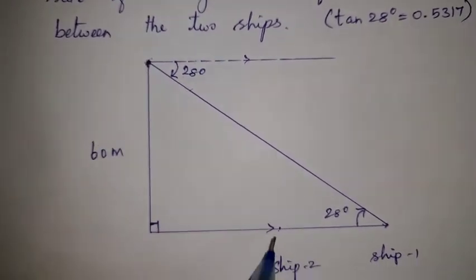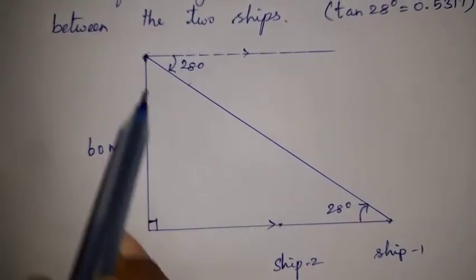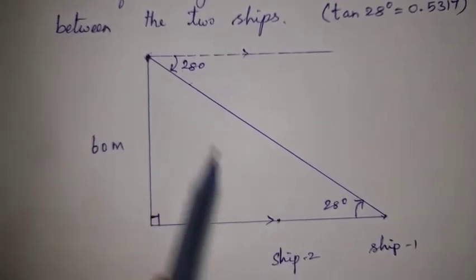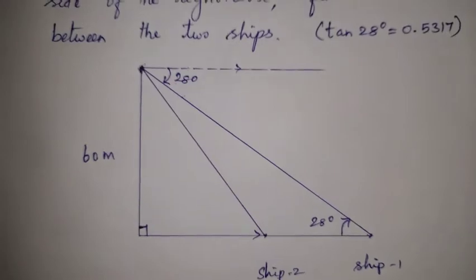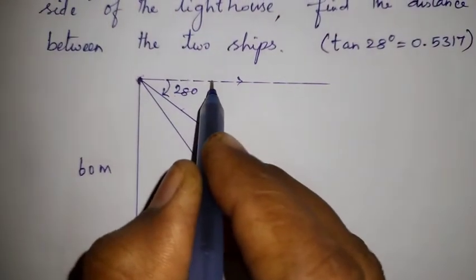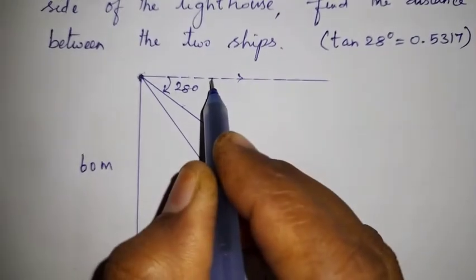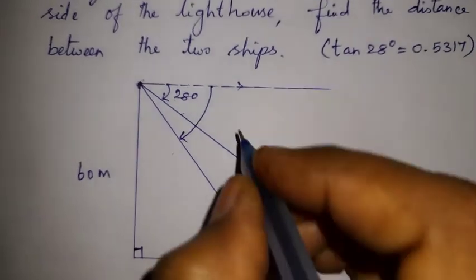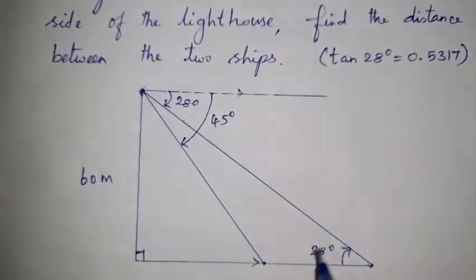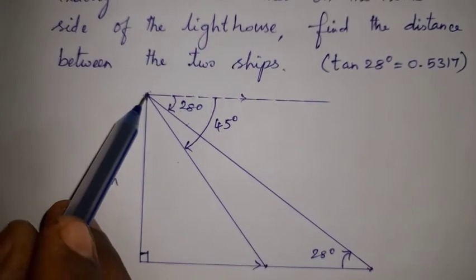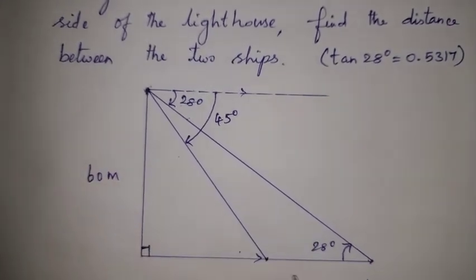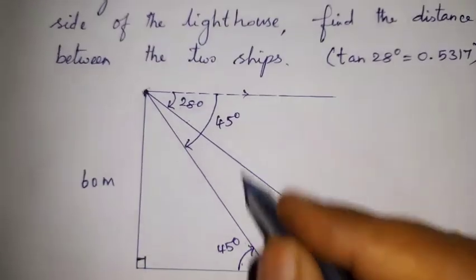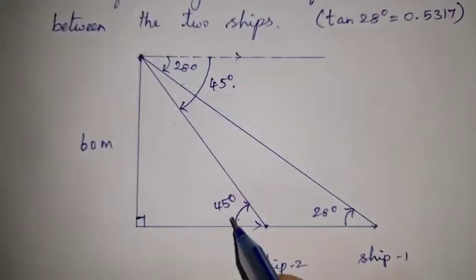From the top of the lighthouse to ship 2, again draw the line of sight. The angle of depression — starting point at the top of the lighthouse, ending point at ship 2. Connect this line. The angle formed is 45 degrees. By alternate angles, the angle at ship 2 is also 45 degrees. Alternate angles are equal, so this is 45 degrees.